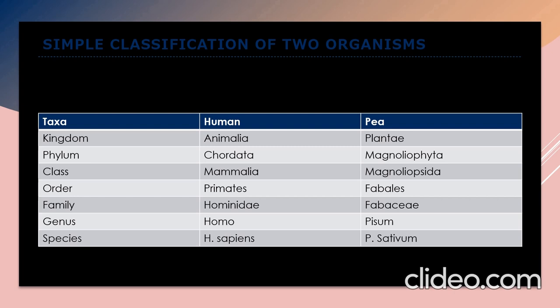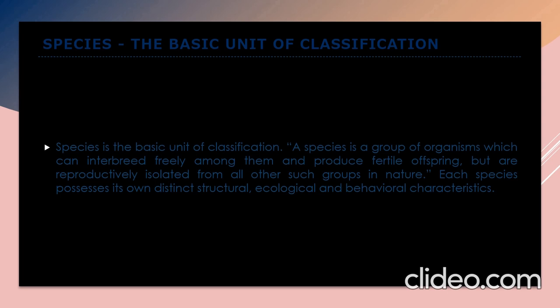The basic unit of classification is species. A species is a group of organisms which can interbreed freely among themselves and produce fertile offspring, but are reproductively isolated from all other such groups in nature. Each species possesses its own distinct structural, ecological, and behavioral characteristics — every species has different characteristics, even if they live in the same place.